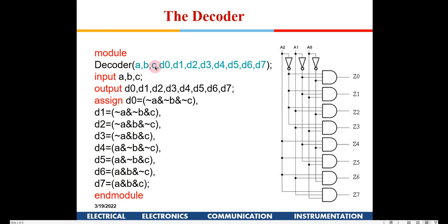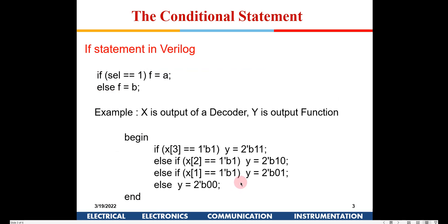The three inputs are A, B, C and the outputs are D0 to D7. You can assign values: for D0 it is NOT(A) AND NOT(B) AND NOT(C), meaning if A is 0, B is 0, C is 0, then D0 will be high. This is the kind of program we write to design a decoder.